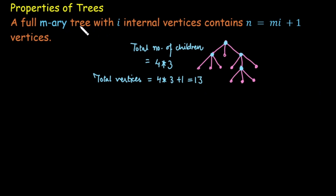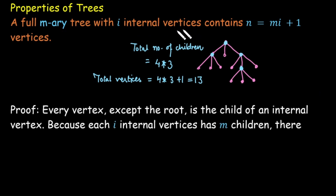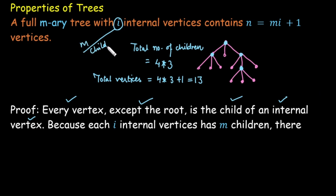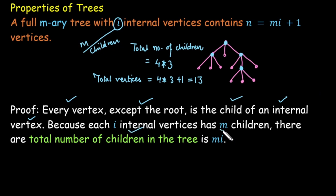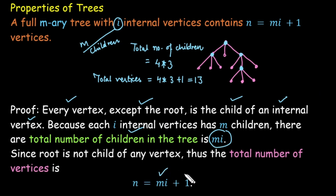Now let's generalize this case. For a full m-ary tree with i internal vertices, every vertex except the root is a child of some internal vertex. We have i internal vertices, each with m children, so the total number of children is m × i. Since the root is not a child of any vertex, the total number of vertices in the tree is m × i + 1.